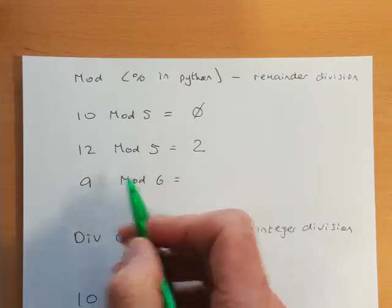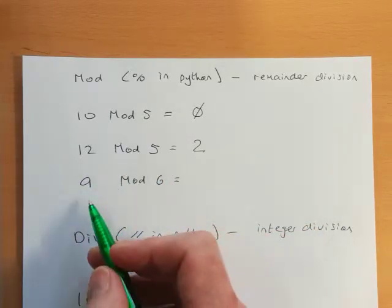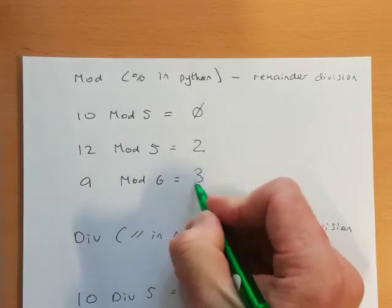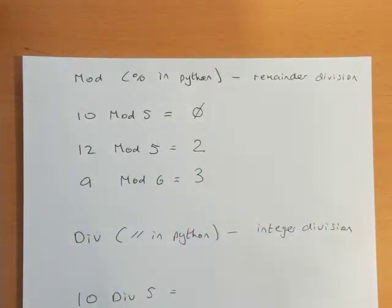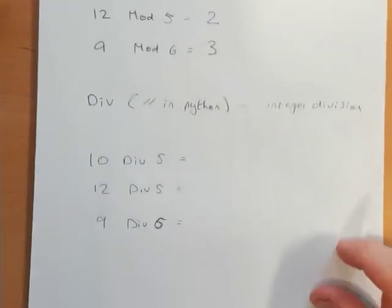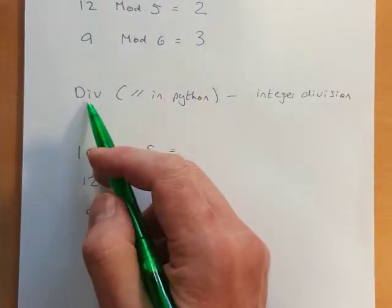So 6 goes into 9 once and we're left with 3. Okay. Next we have div or integer division.